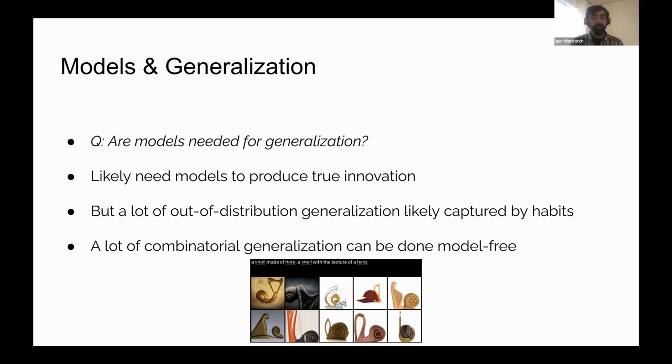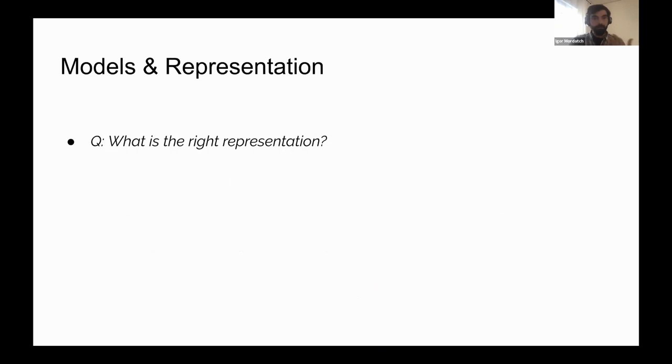We've already seen examples with images that combinatorial generalization could be done model-free. If we wanted to generate an image of a snail in the shape of a harp, or a red square or blue ball, we can do this type of combinatorial generalization in space of images with these models. Potentially we can do that in space of behaviors as well, which could go a long way towards making robots useful and general without them necessarily needing to produce something truly innovative.